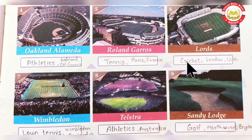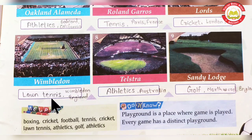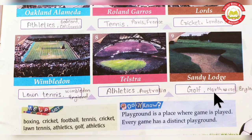Next one is Lord's. Lord's belongs to Cricket and is situated in London, UK — UK means United Kingdom. The 7th one is Wimbledon, which is a Lawn Tennis stadium located in Wimbledon, England. Lawn Tennis is similar to badminton but played with a tennis ball. Next is Telstra Stadium, which belongs to Athletics and is located in Australia. Number nine is Sandy Lodge, which belongs to Golf and is located in Northwood, England.